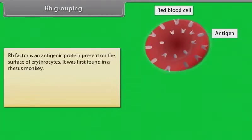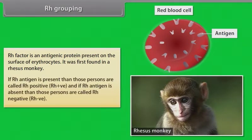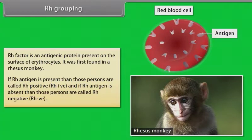RH factor is an antigenic protein present on the surface of erythrocytes, first found in a rhesus monkey. If the RH antigen is present, those persons are called RH positive; if absent, they are called RH negative.